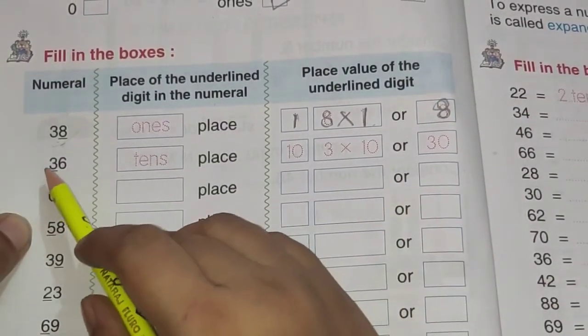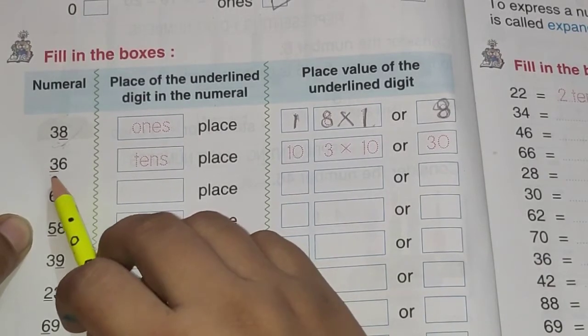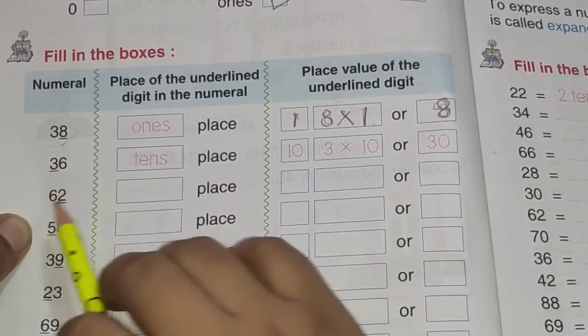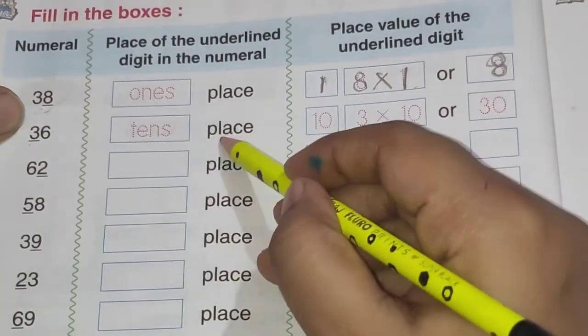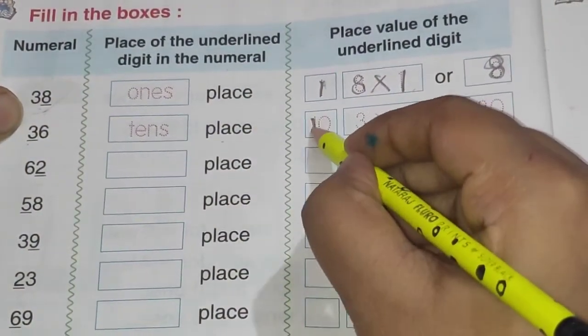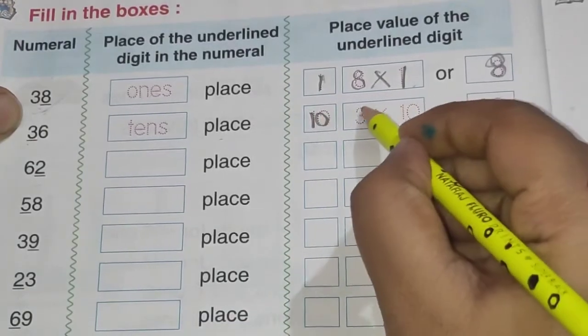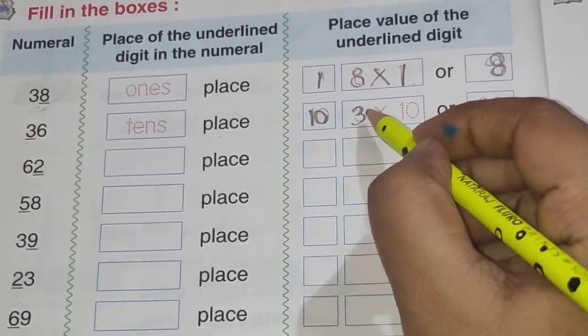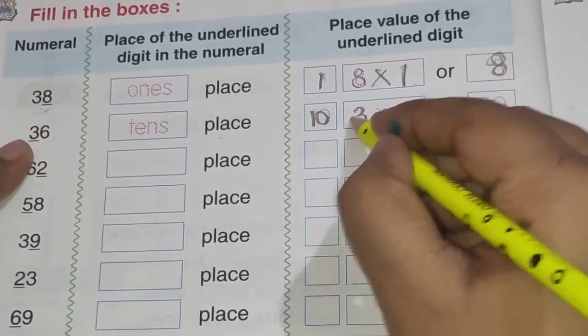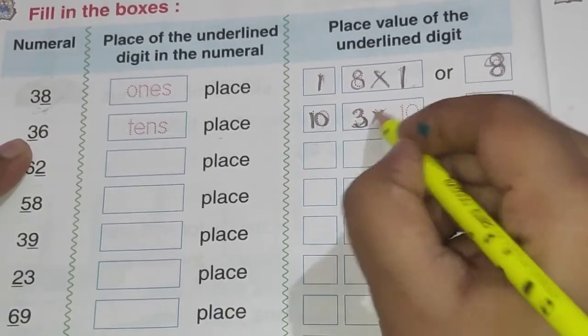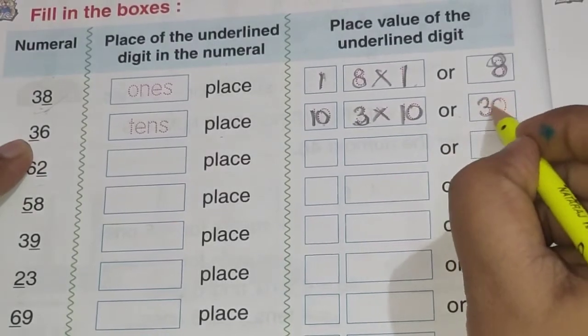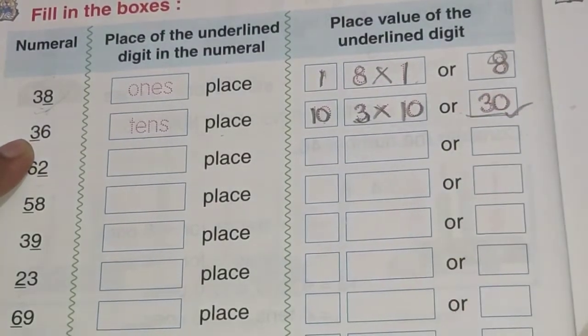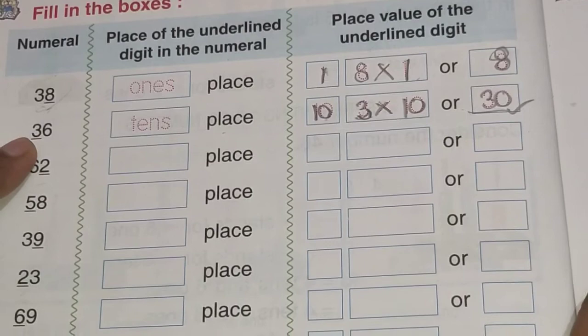Then 36, 3 kis place pe hai? 3 underlined hai na? To 3 kis place pe hai? Tens place pe hai. So it is tens place. Aur tens ki value hoti hai. 10. 3, 3. So yaha par number hai na? Yaha par 3 number hai. Aur tens ki place ki value hoti hai ten. So 3 into 10. That is 3 into 10. Yaha aur 3, 0, 30. So yaha par number ki place value.